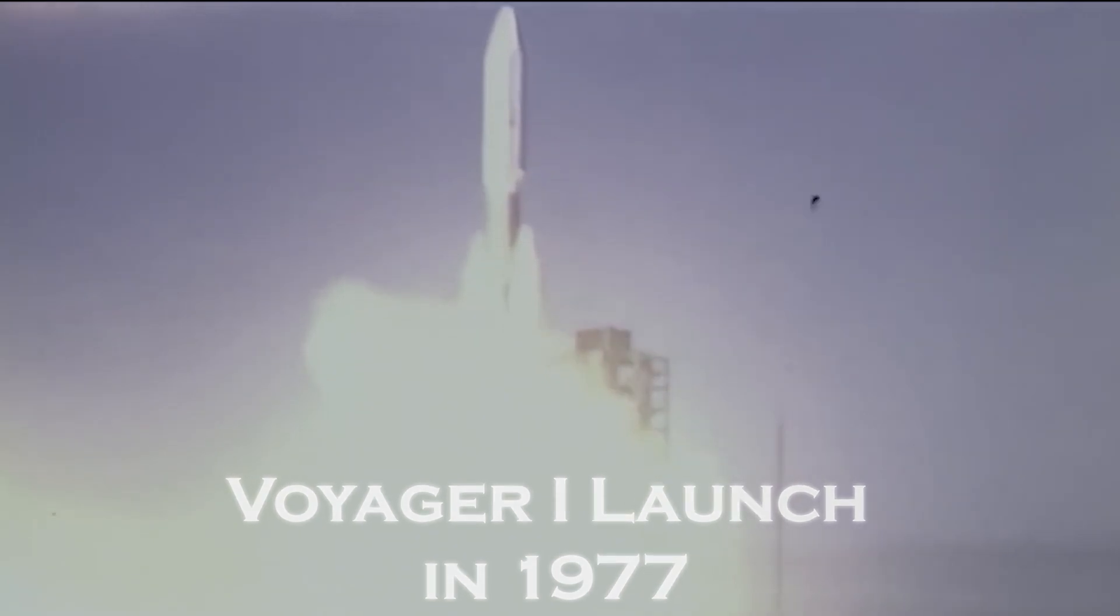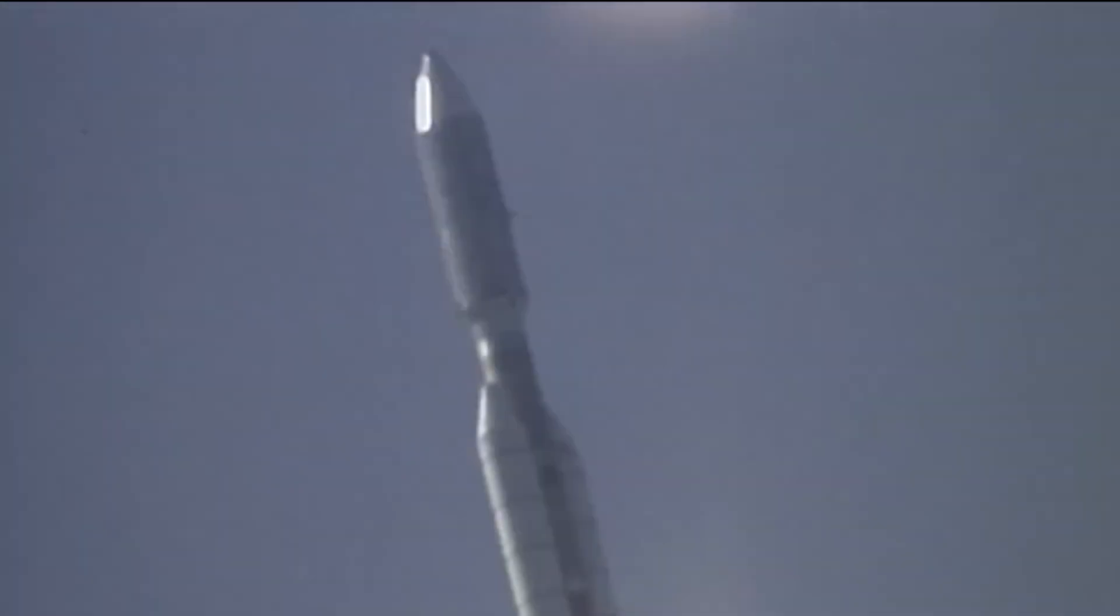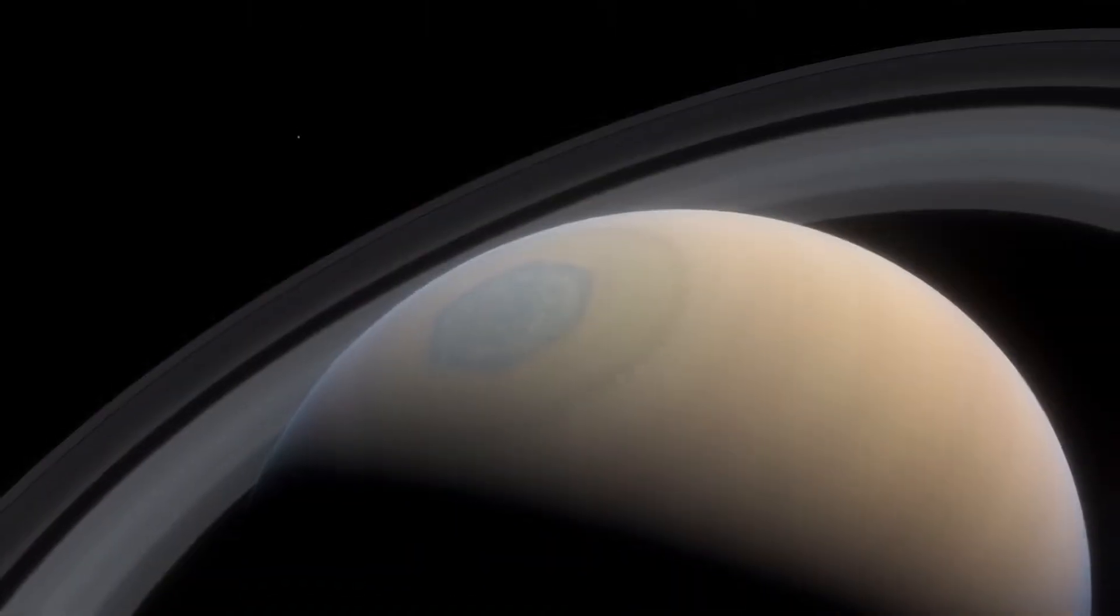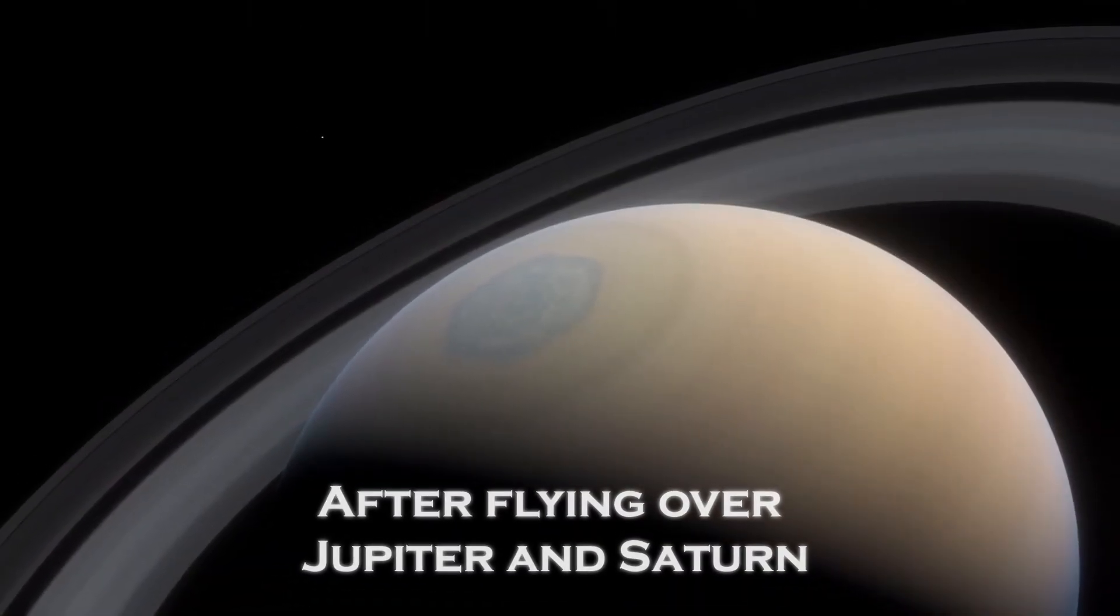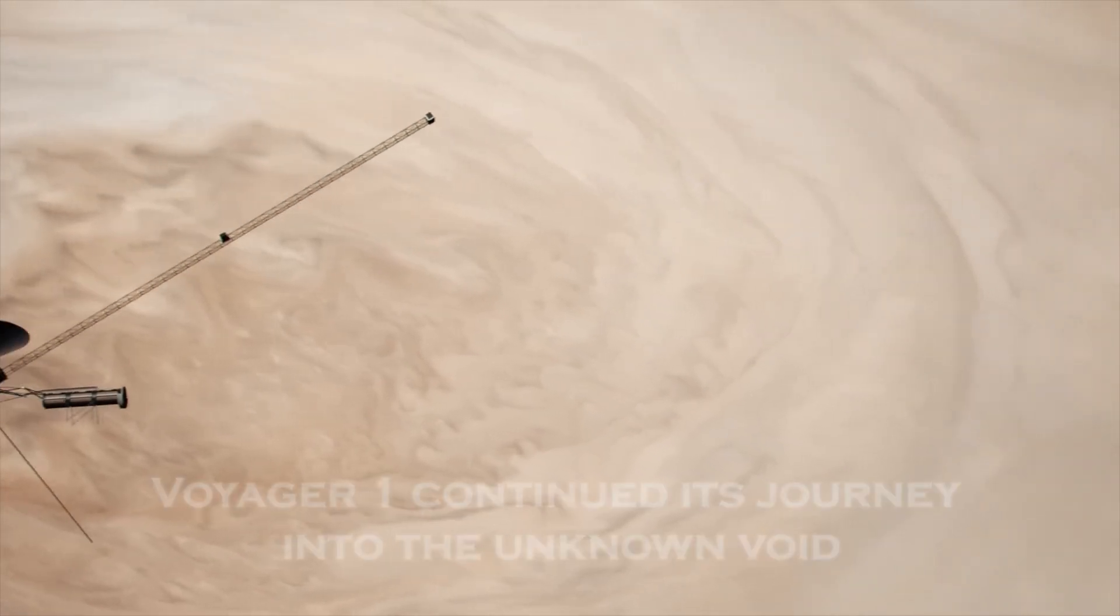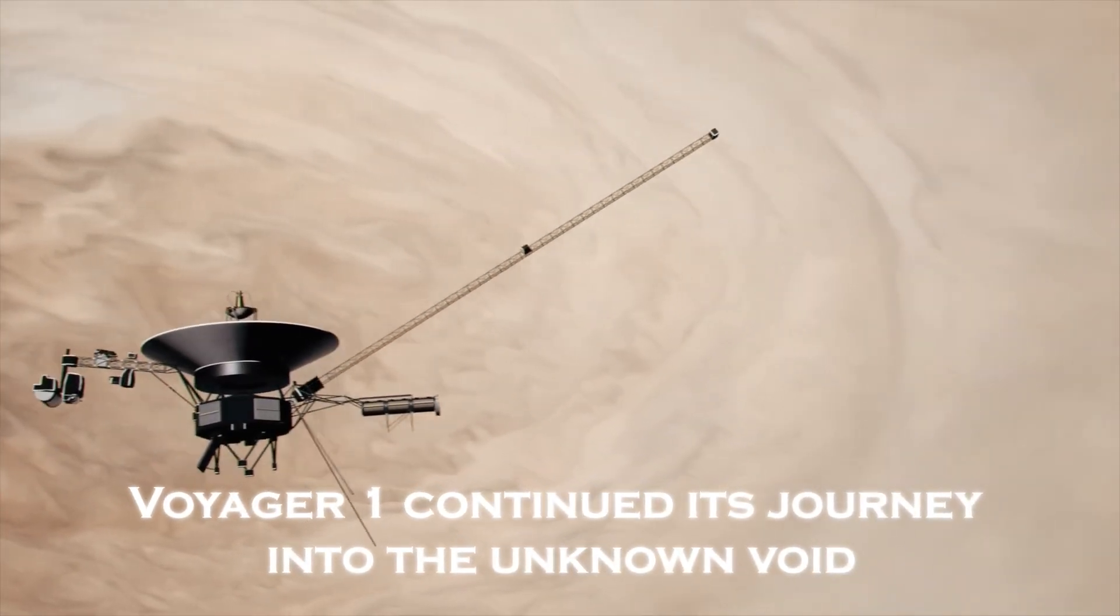Launched in 1977, Voyager 1 had a clear mission: to explore the outermost planets of our solar system, collect data, and one day perhaps cross that invisible boundary that separates our solar system from interstellar space. After a flyby over Jupiter and Saturn, sending us unprecedented images and data, Voyager 1 continued its journey into the unknown void.